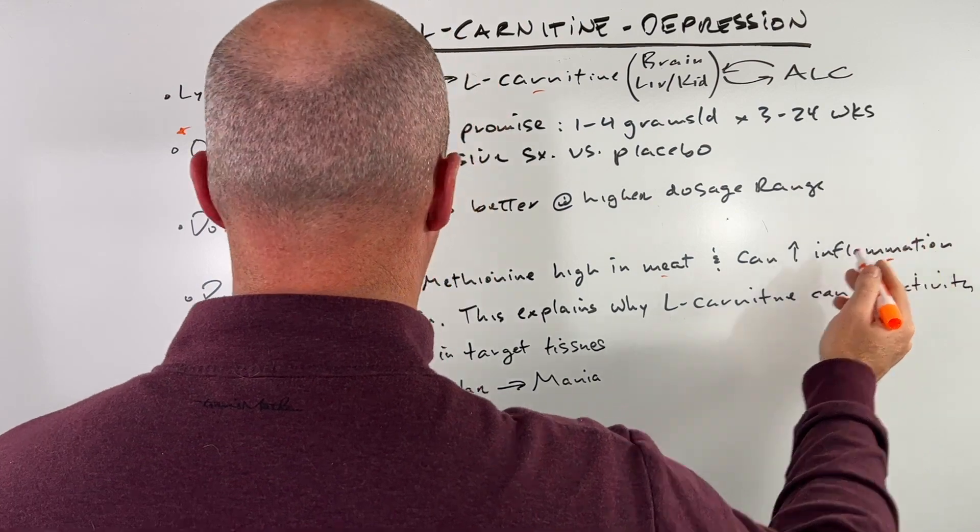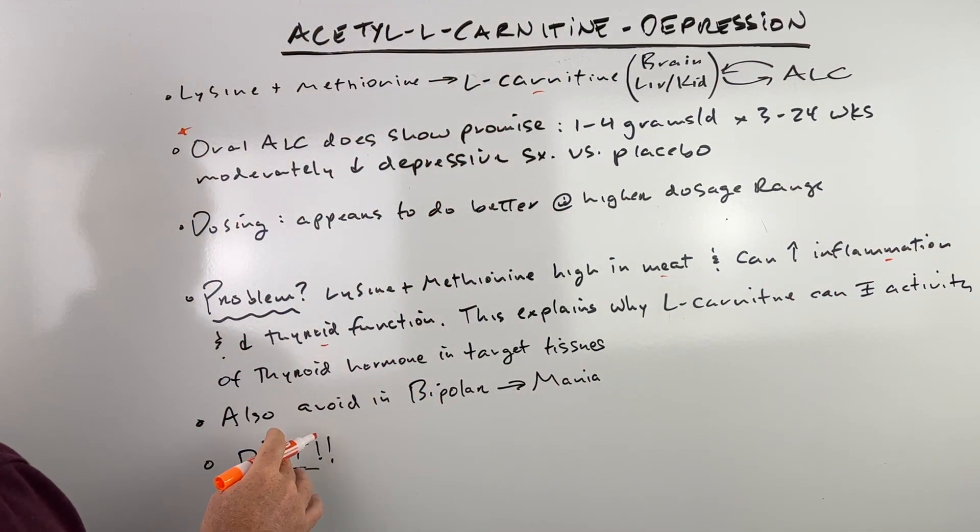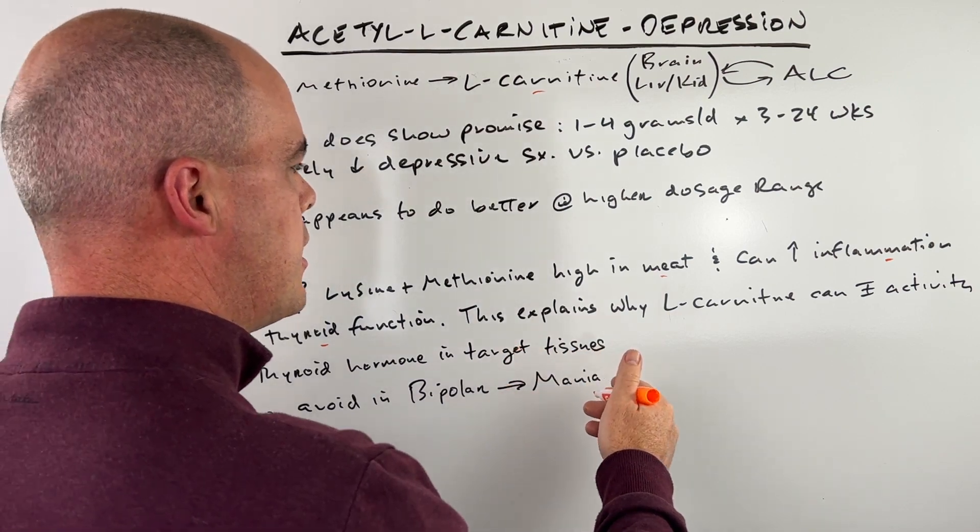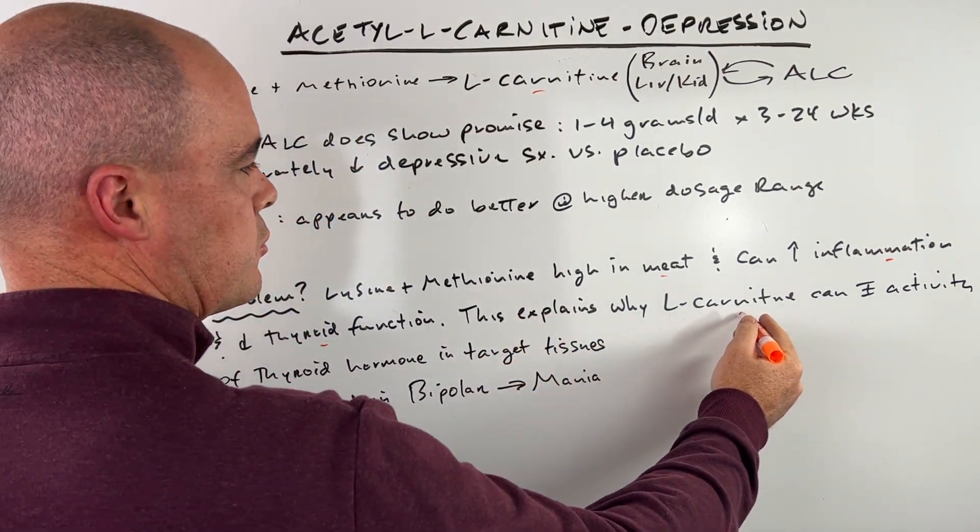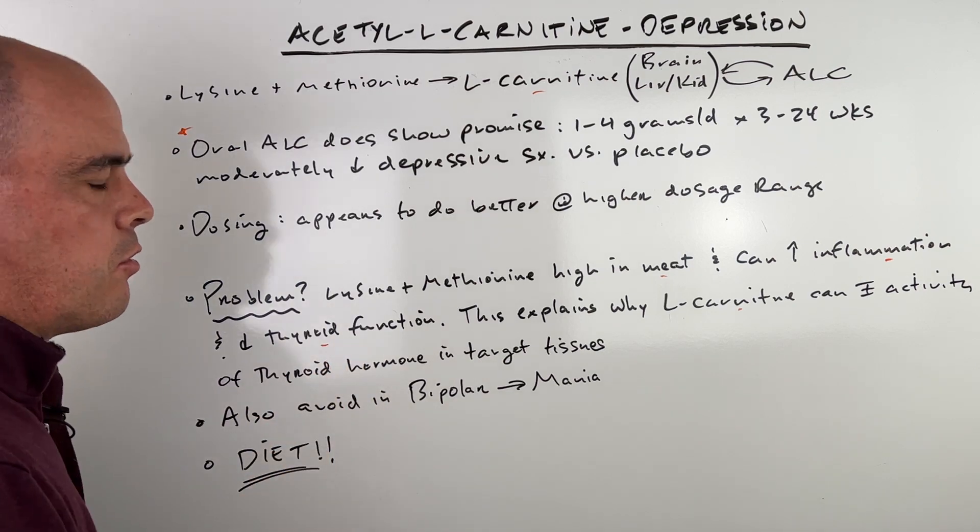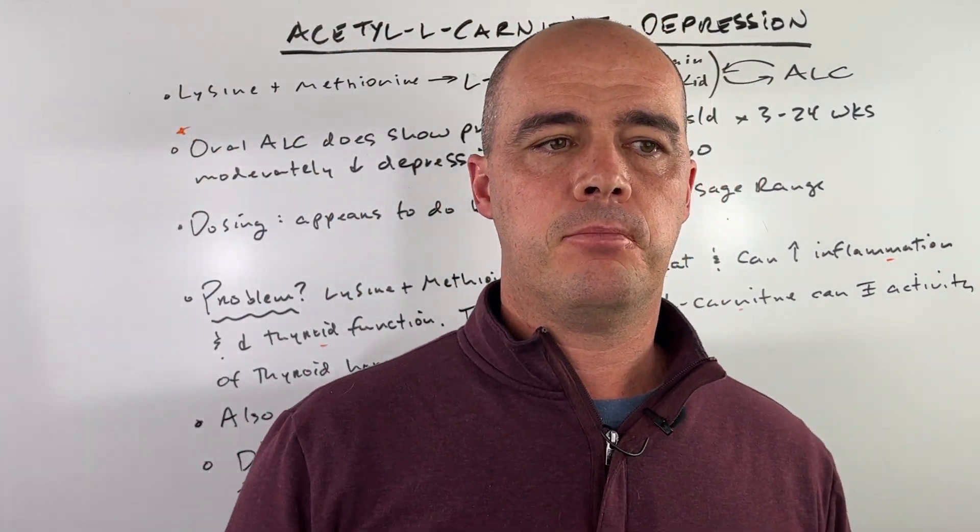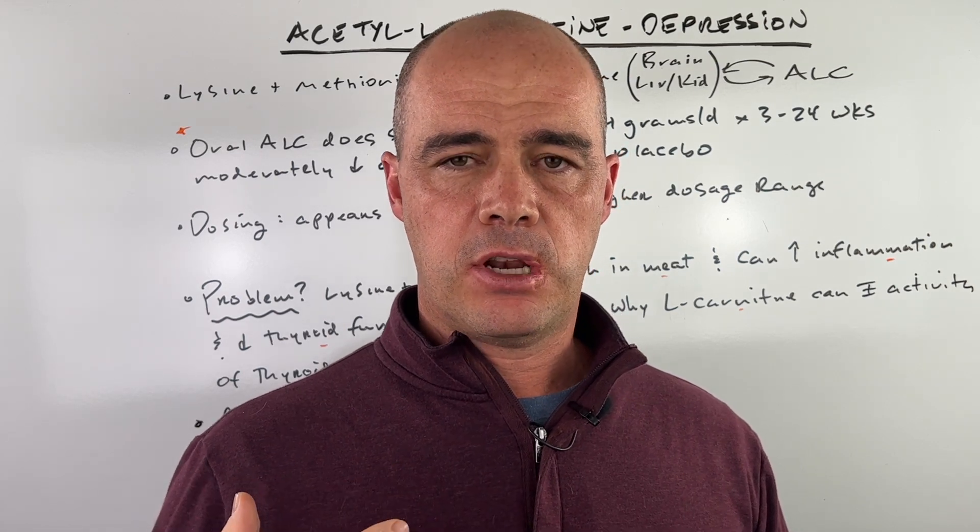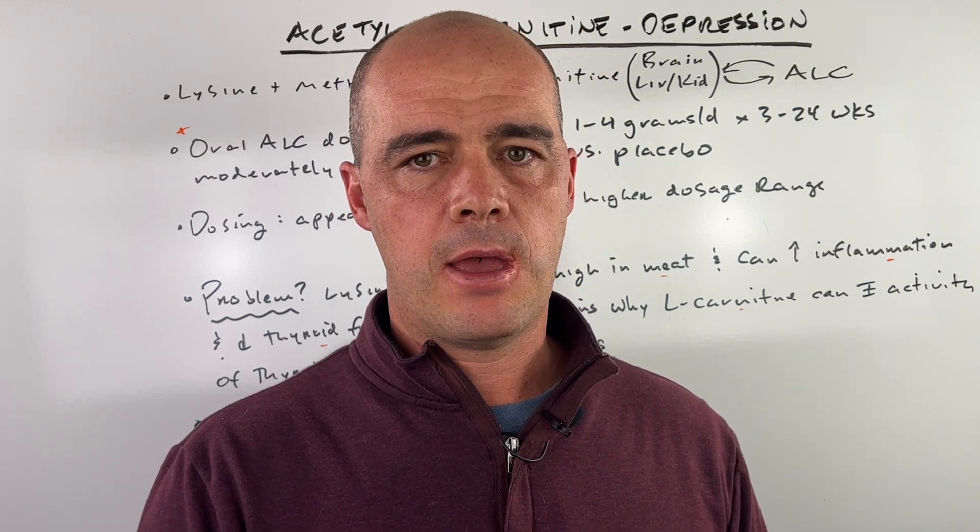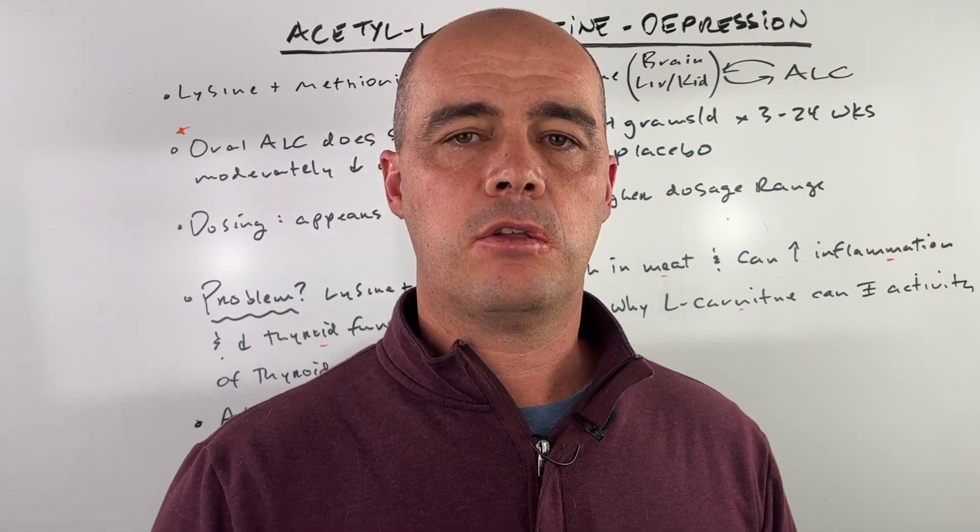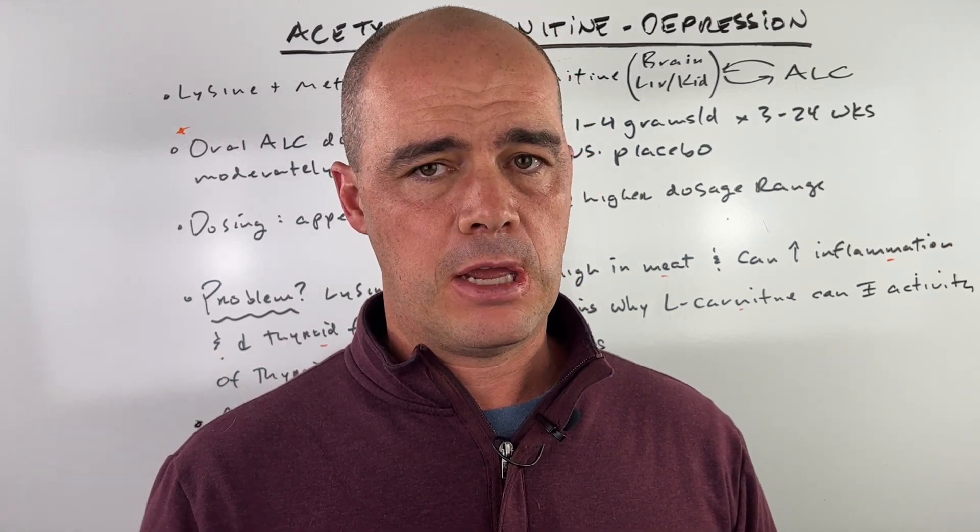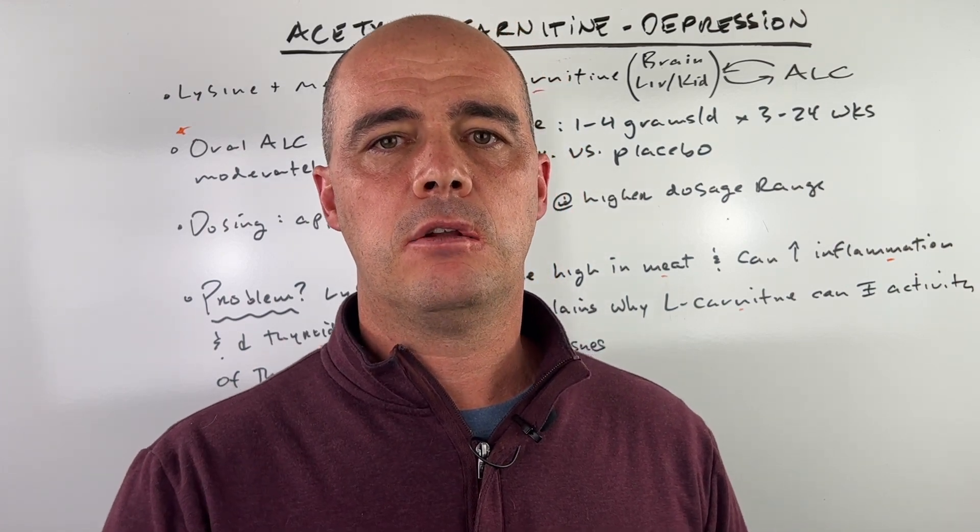It can be pro-inflammatory and it can be hard on your thyroid function because these are amino acids which can be inflammatory. Lysine and methionine are amino acids in meat. This explains why in studies, what they found is when they gave people L-carnitine, remember L-carnitine can be converted to ALC, it can actually inhibit the activity of thyroid hormones and target tissues. The reason I bring this up is yes, it has shown some promise in depression, but oftentimes people with low thyroid function can have depressive type symptoms manifest because they don't have energy, they're gaining weight, those sorts of things. So oftentimes they go hand in hand. I would definitely not take ALC if you have any sort of thyroid issues.